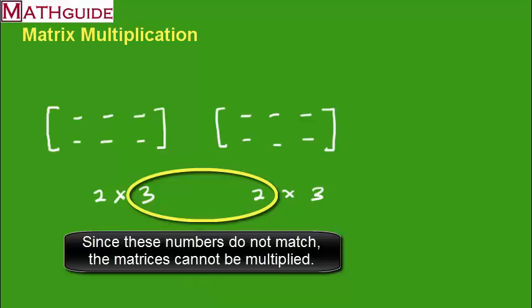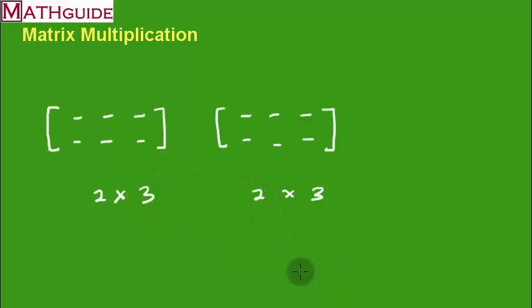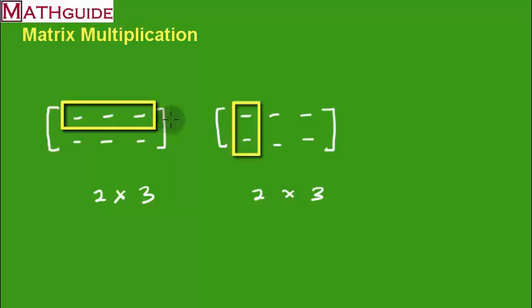That's an easy check to do. If you try plugging these into a calculator it's going to give you an error — probably a dimension error. Why doesn't it work? When you multiply, you take a column of the first matrix and multiply it by a row of the second. There are just not enough numbers to match: I've got two numbers here but I need to multiply by three. The number of values in the column must match the number of values in the row.